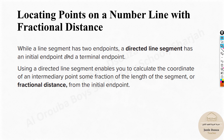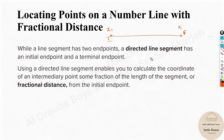A line with any two endpoints is a line segment. A directed line segment is similar, but it has a specific initial point x1 and a final or terminal endpoint. With a regular line segment, the two endpoints can be interchanged, but not in a directed line segment. When a fractional distance is given, we need to find a specific distance from the initial point, and we can find it using a simple formula.